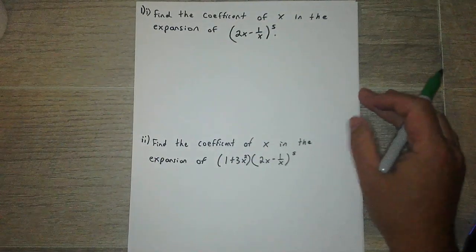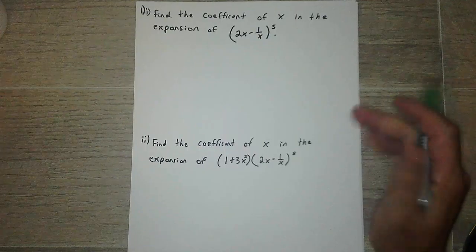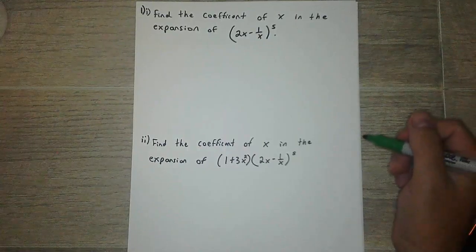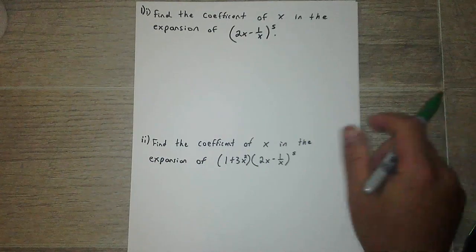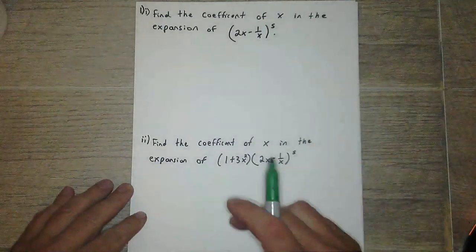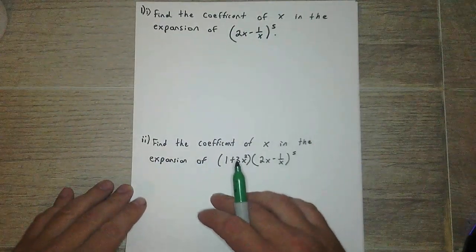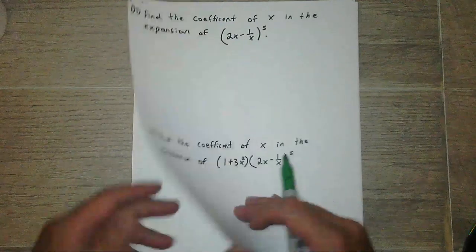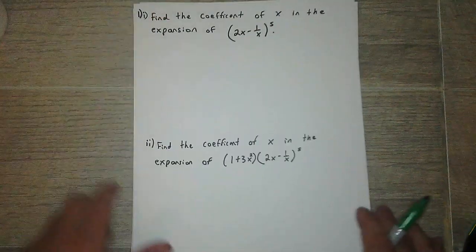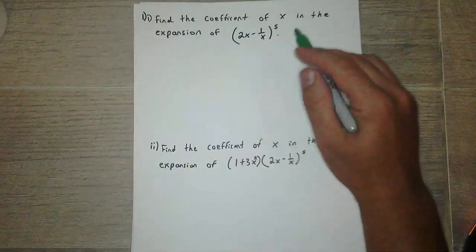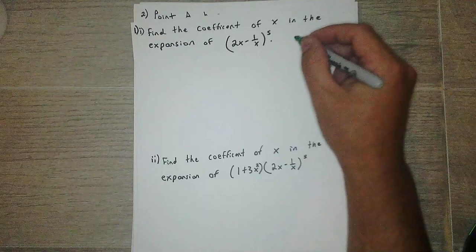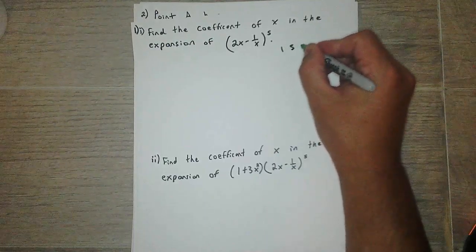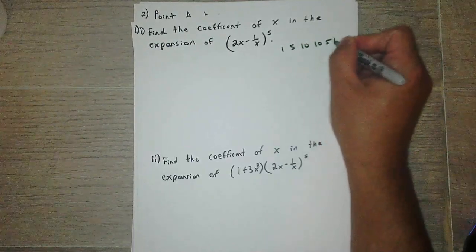Okay, so the first one was binomial expansion. Find the coefficient of x in the expansion of (2x minus 1/x) to the 5th. I guess I'll do it on here. So we have fifth row of Pascal's Triangle: 1, 5, 10, 10, 5, 1.